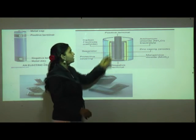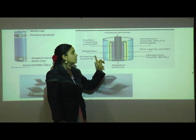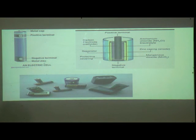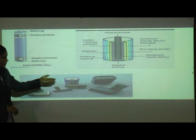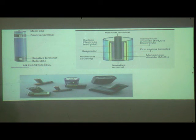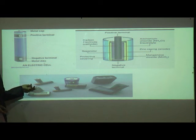These are the chemicals inside the electric cell that produce electricity. Cells and batteries can be used in cameras, remotes, and toys — for example, in remote control cars and similar devices.